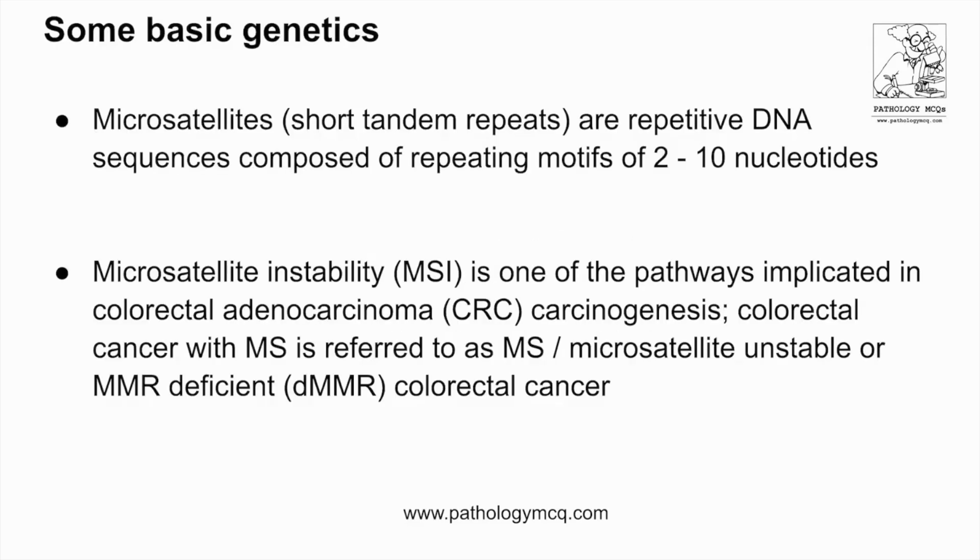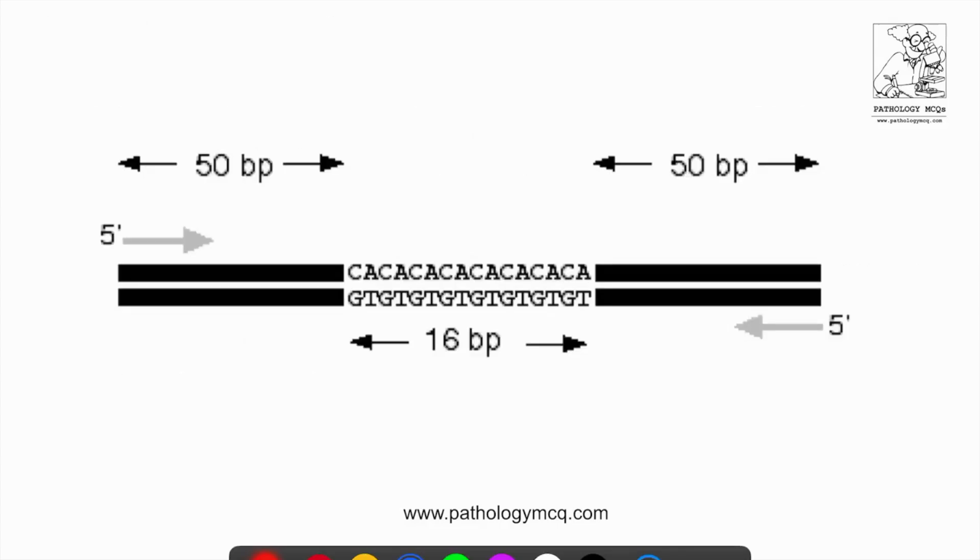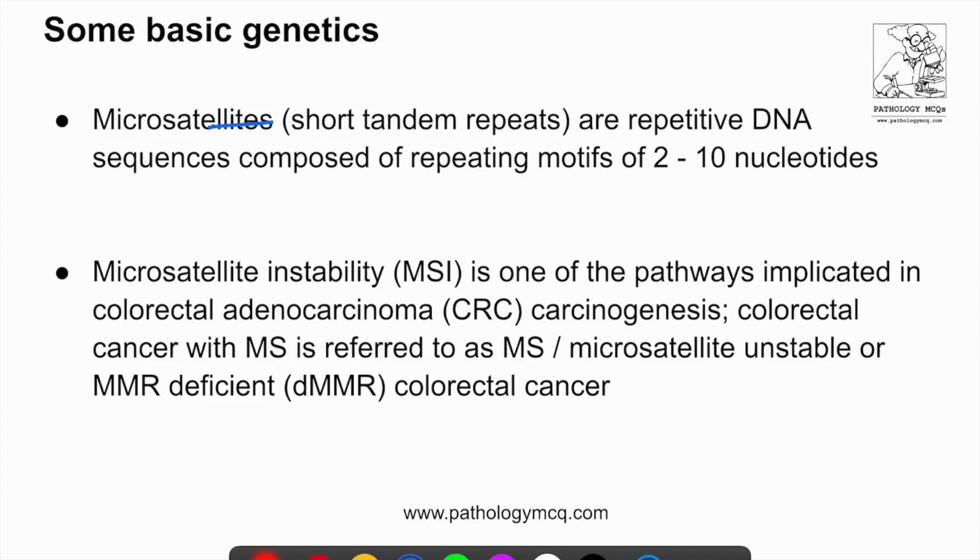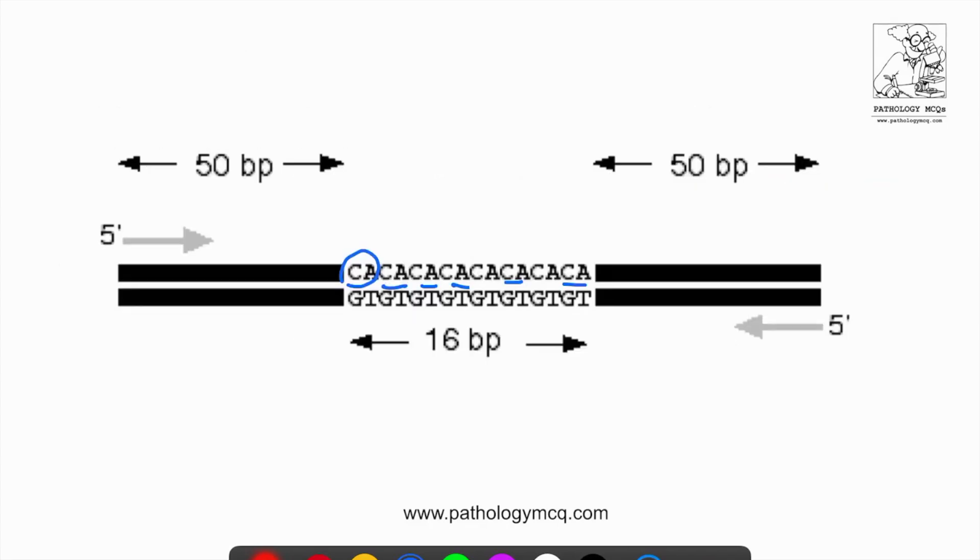So what are microsatellites? Microsatellites are just short tandem repeats of repetitive DNA sequences, as you can see here. These are short repeats. You can see CA repeats over here. These are short tandems which are repeated and they might be up to 2 to 10 nucleotide base pairs. Here are a few base pairs of these repeats.